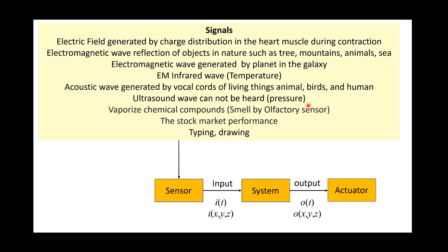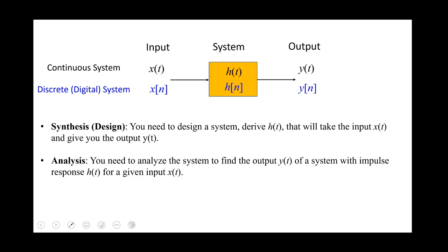Now let's focus on the input signal, system, and output signal. In the continuous system, we have an input x(t), a system described by the impulse response h(t), and an output y(t). In the discrete digital system, x(t) is sampled to give x(n) — only pieces of information, for example every 1 millisecond. Similarly h(n), and the output y(n) is the convolution of x(n) and h(n). For continuous, y(t) is the convolution of x(t) and h(t).